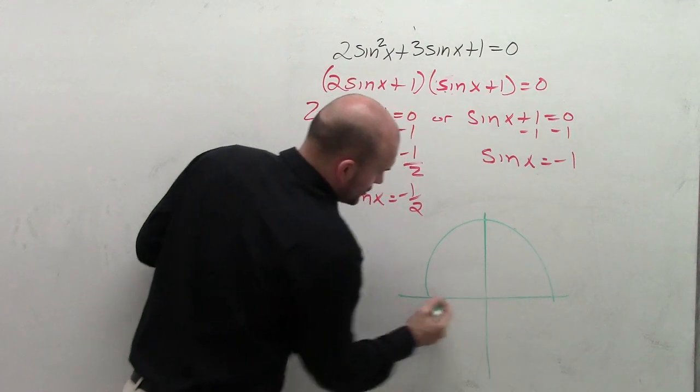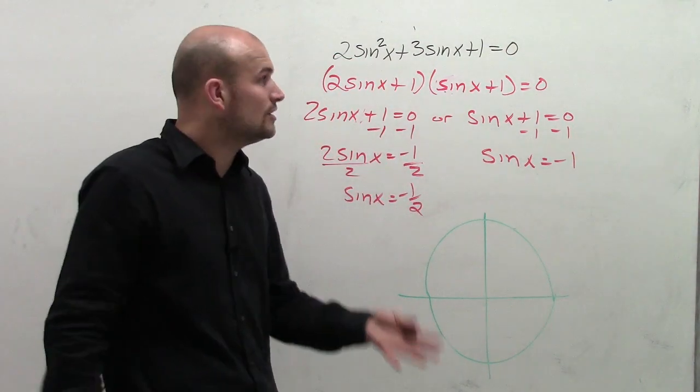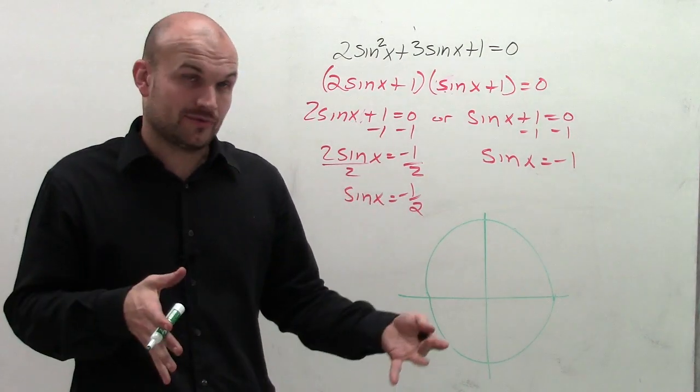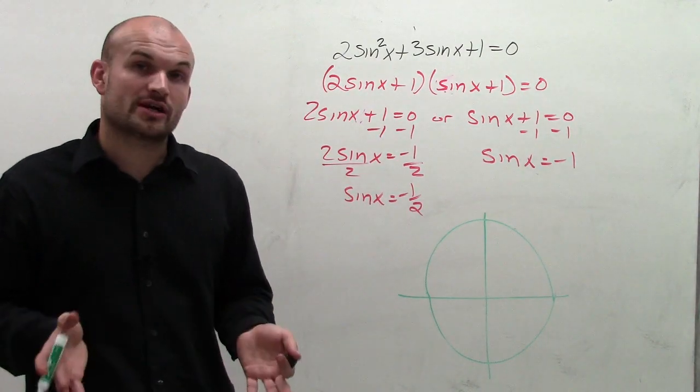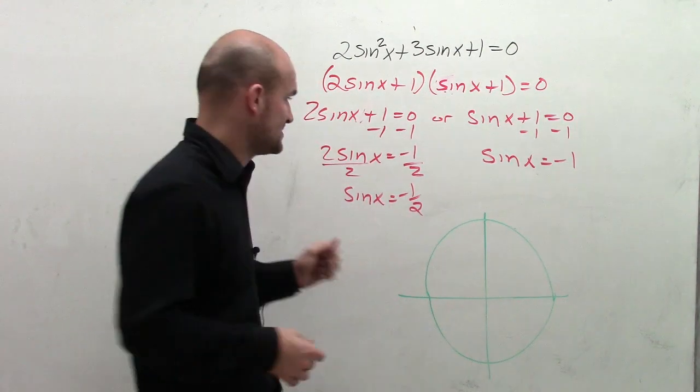Let's apply the unit circle to help us find all the values on the interval of 0 to 2 pi. However, we're going to want to find all the values of our trigonometric function, but we'll use the unit circle for our first interval to help us out.